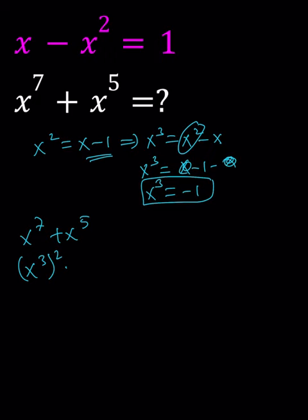Now we can write x to the 7th as x cubed squared times x, and x to the 5th as x cubed times x squared.